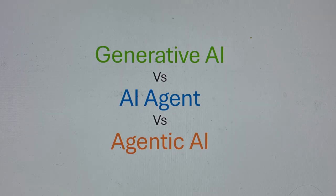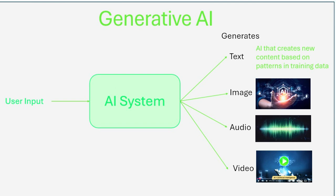Let us start with Generative AI. Think of tools like ChatGPT. They can create text, audio, or even video. Generative AI works by learning from data and then producing new content. For example, if you ask a question, it generates a response for you in the form of generating content.